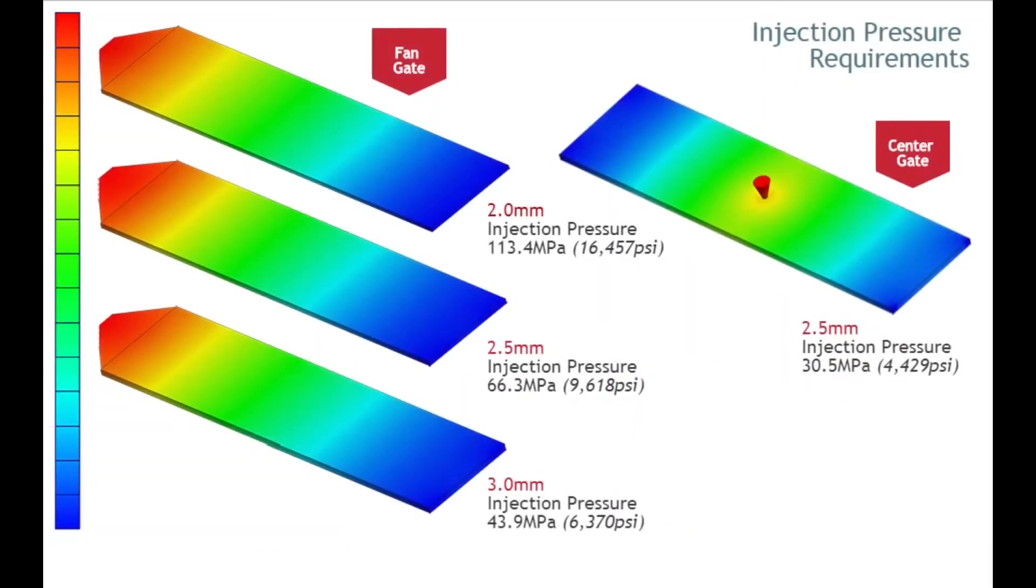To start, let's look at the injection pressure for all four examples. The part will be processed with the same melt temperature, mold temperature, and fill time. The required injection pressure was reached at the switchover point from fill to the packing phase.